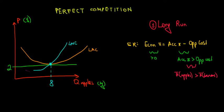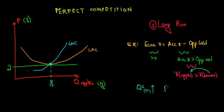What happens naturally is that banana producers are going to see that apples are more profitable, so they are going to start selling apples as well. We're going to have a shift from banana producers into apple producers. The supply of apples — the quantity supplied in the market — is going to go up, which will drag down the price of apples. We can see here that now the price is only two dollars, whereas before in the short run it used to be five.